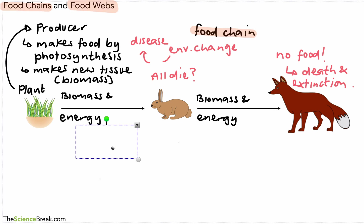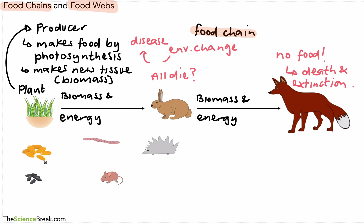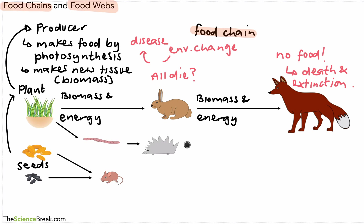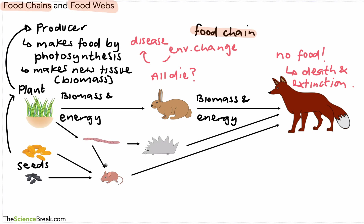This is not very good because the foxes rely on one food source. However, in reality there's not just rabbits and foxes that live in the area — we have other living things as well. Here on the left we've got some seeds, and these seeds could be eaten by, for example, mice. We have also the plant being eaten by a worm, the worm could be eaten by a hedgehog, the hedgehog is another food source for the fox, and also the mouse would be a food source for the fox as well. This is what we call a food web — a more realistic view of what actually happens in nature.